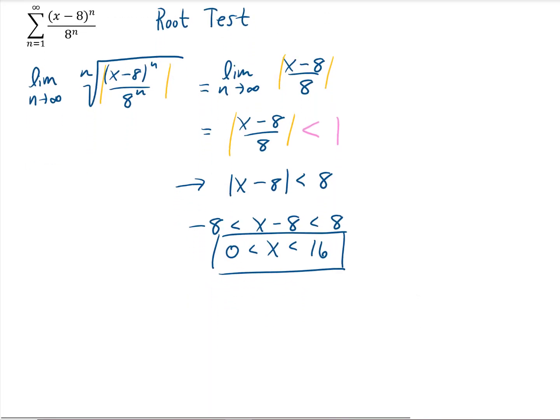Let's test x equals 0 first. If we plug x equals 0 into this original series up here, we would get negative 8 to the n in the numerator and we have 8 to the n in the denominator. That would simplify to negative 1 to the nth power.